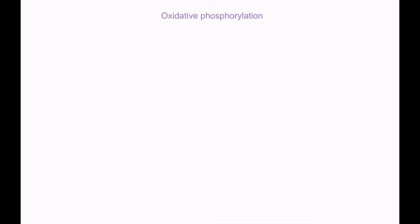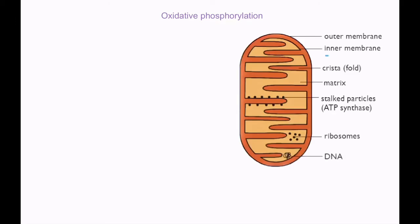In this video I'm going to talk about oxidative phosphorylation, which is the fourth stage of aerobic respiration. It takes place in the inner membrane of mitochondria, unlike the link reaction and Krebs cycle which also take place in the mitochondria but in the matrix. Glycolysis takes place in the cytoplasm, not in the mitochondria.